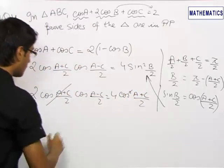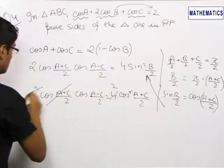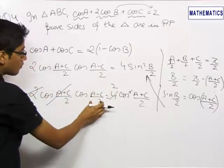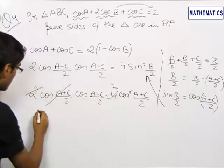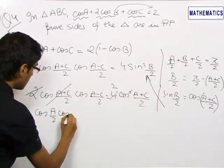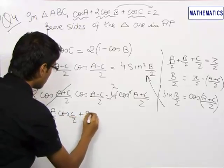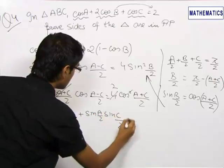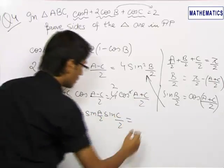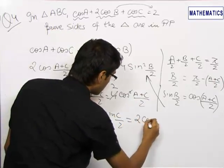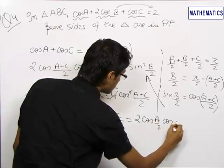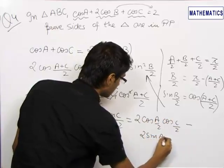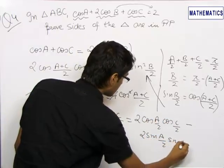Canceling terms, we get cos((A-C)/2). Applying the formula for cos(A-B), we get cos(A/2)cos(C/2) + sin(A/2)sin(C/2) = 2cos(A/2)cos(C/2) - 2sin(A/2)sin(C/2).